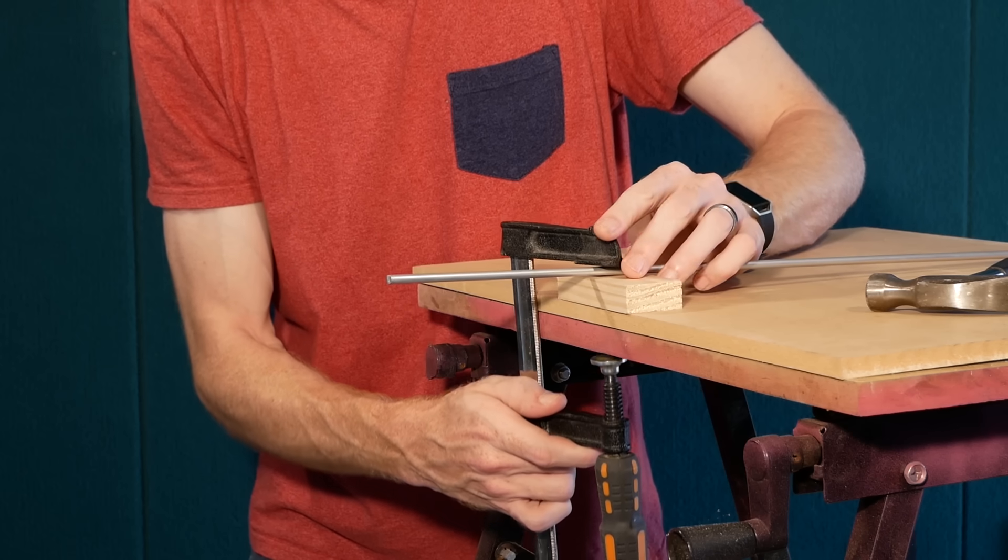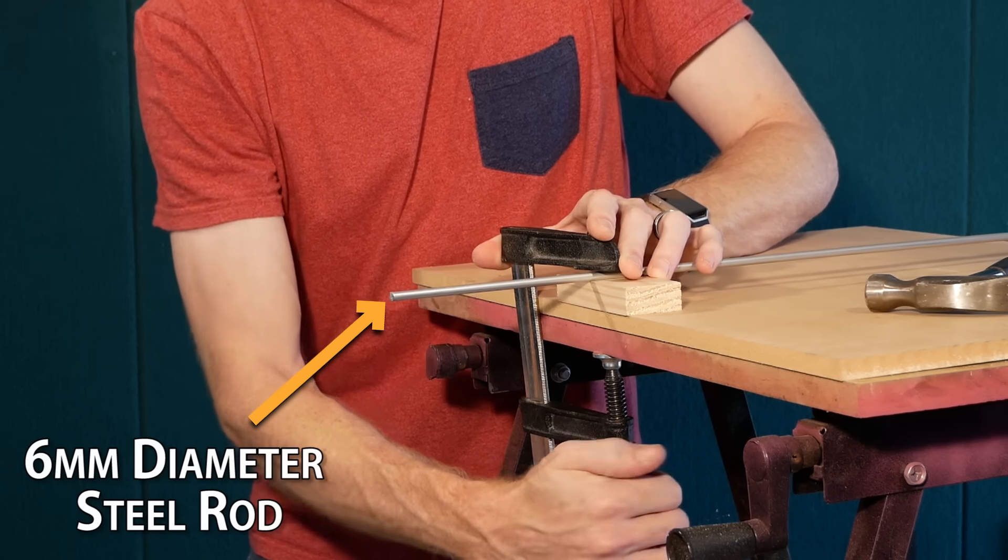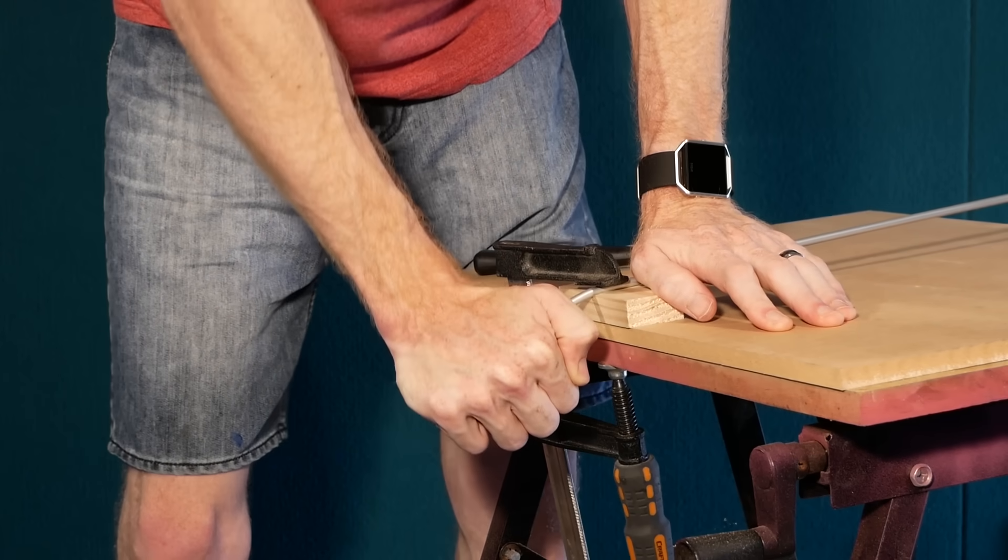The main supporting arm for the nichrome wire is made using 6mm diameter steel rod. It can be a little difficult to bend but using a hammer should get the job done.